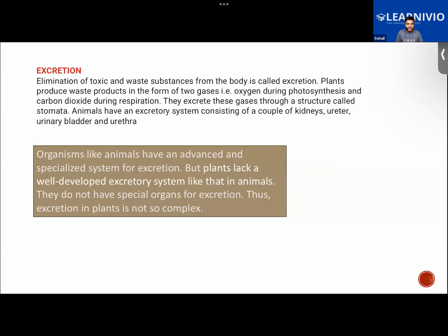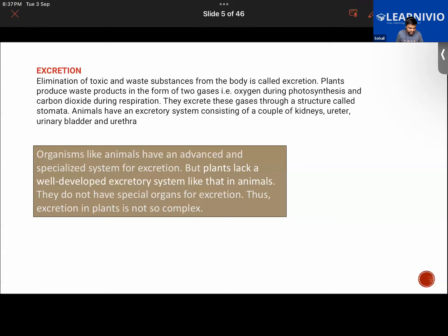Carbon dioxide gas is also produced as a waste product. We humans and most of the animals around us have very advanced systems in their bodies to get rid of waste. For example, we have a kidney, urinary bladder, urethra, and ureter.